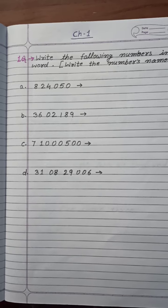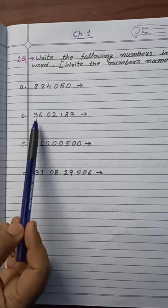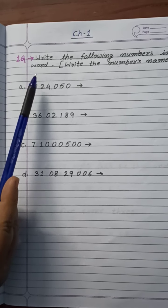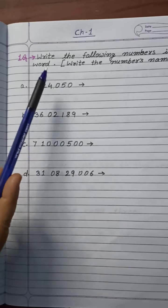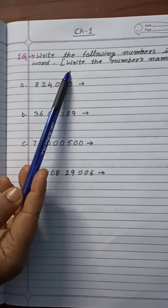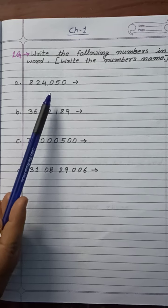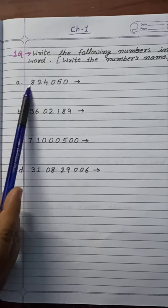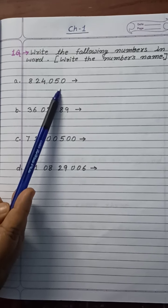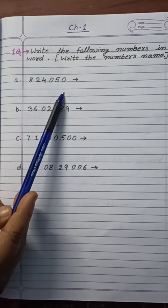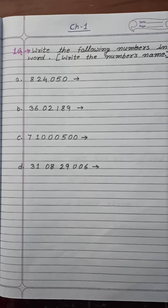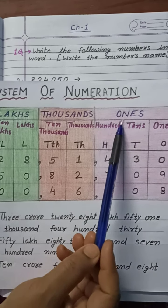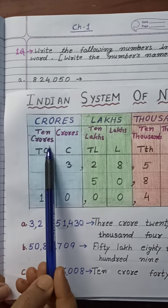Today we will write numbers in words. So let's see the first question: write the following numbers in word, or in another way, write the number name. Children, if you remember, when you see the numbers, first you have to keep in mind the four periods which we use to read or write the number. Those periods are: ones, thousands, lakhs, and crores.